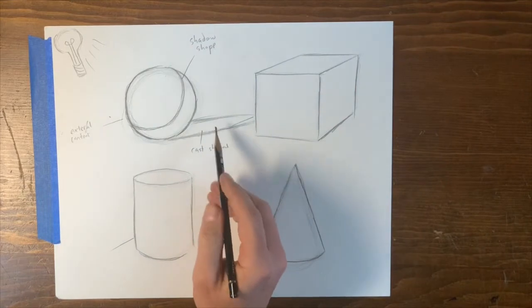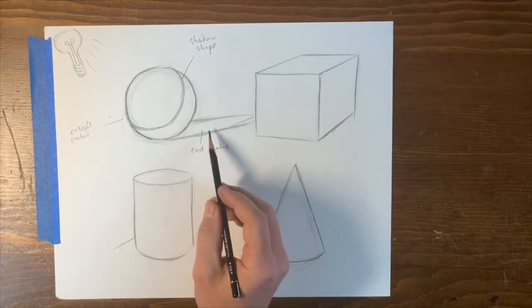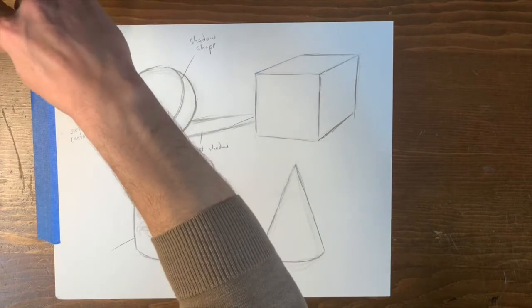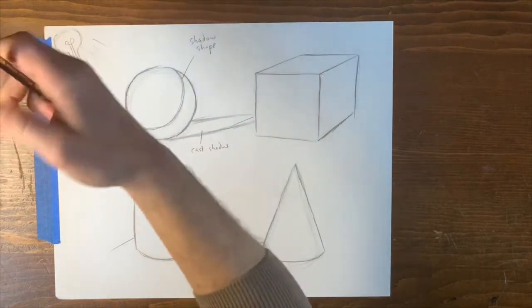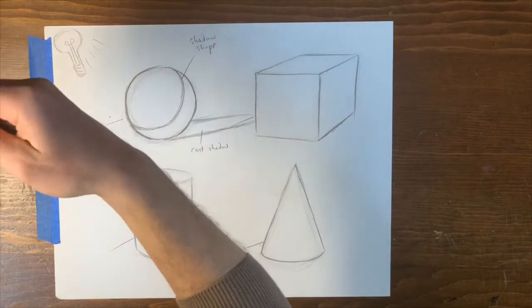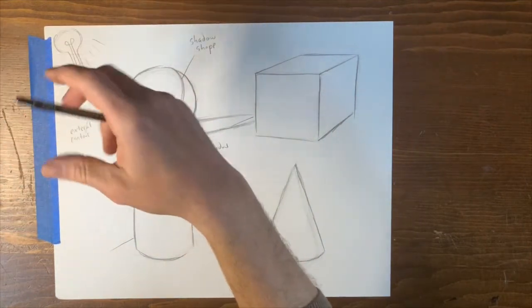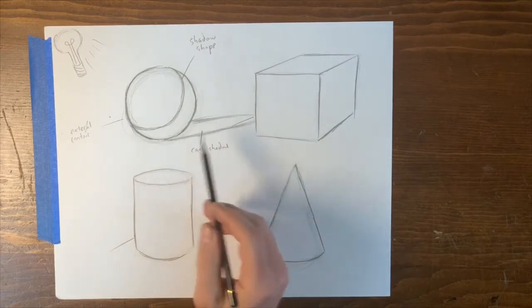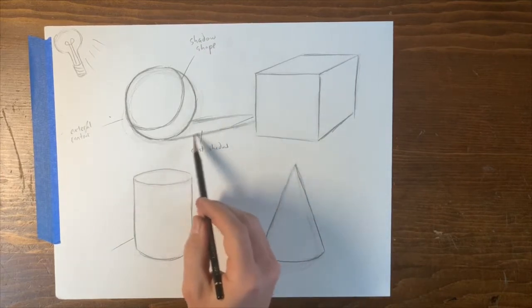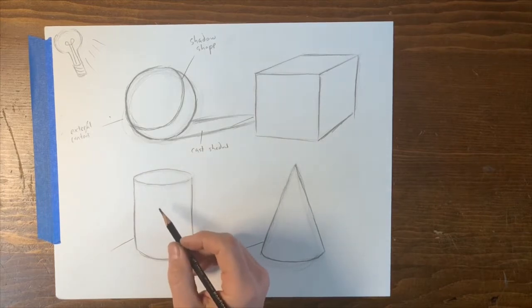We're going to return to this, but suffice to say, the cast shadow, depending on the height of the light, there's a lot of qualities to light. Sometimes it's diffused. Sometimes it's pinpoint direct, but we can always close our eyes squint in order to look at the cast shadow and simplify it in the most basic of terms.